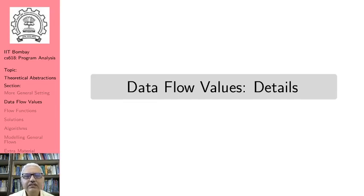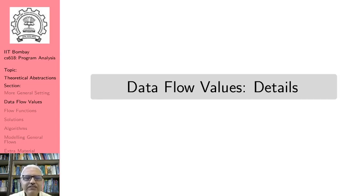Welcome to the next lecture in the second module. What we have seen so far is the need of a general setting. We looked at an example of constant propagation and realized that the mold of bit vector data flow frameworks is not sufficient to describe constant propagation. We realized that we need to talk about data flow values, the operations on data flow values, and solutions from algorithms that we use to get those solutions.